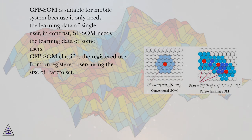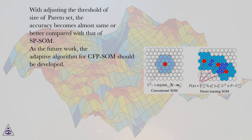In contrast, SP-SOM needs the learning data of some users. CFP-SOM classifies the registered user from unregistered users using the size of Pareto set. With adjusting the threshold of size of Pareto set, the accuracy becomes almost same or better compared with that of SP-SOM.